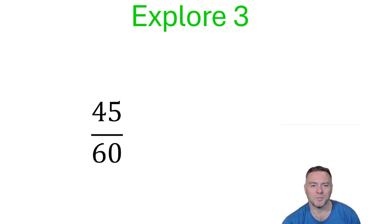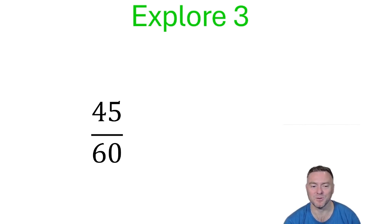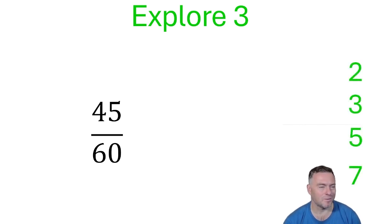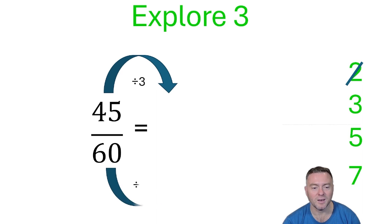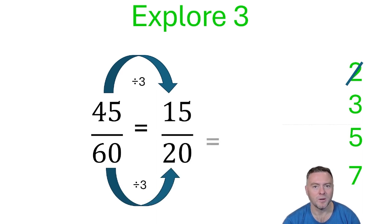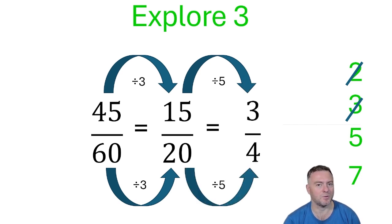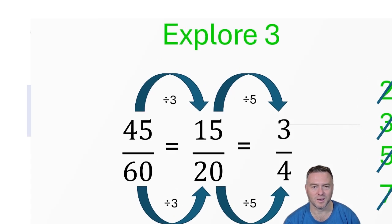Have a go at this one — I don't mind which way you do it. Hopefully you've picked up this is the same as a clock: 45 out of 60 is the same as 3 quarters of an hour. That's why a lot of teachers in primary school will use time to help you see those patterns. In this case, we can't divide them both by 2, but we can divide them both by 3, giving 15 out of 20. We can then divide by 5, which gives us 3 out of 4. Alternatively, you could just divide them both by 15 if you can see that pattern.